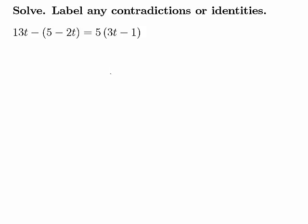Solve. Label any contradictions or identities. We have 13t minus the quantity 5 minus 2t equals 5 times the quantity 3t minus 1.